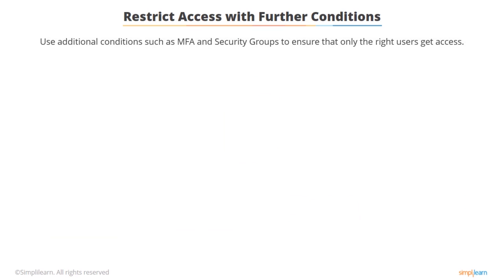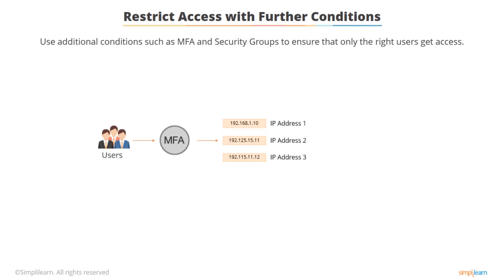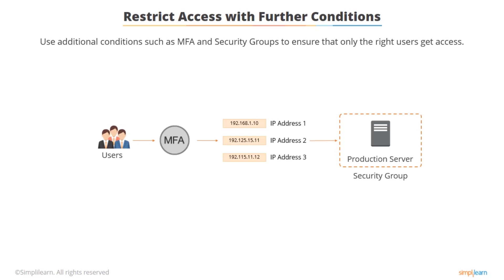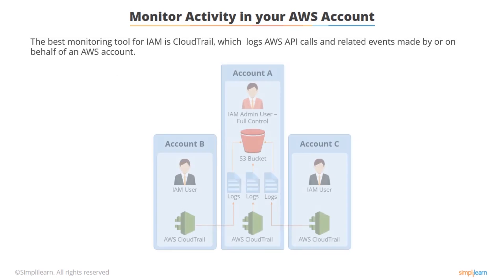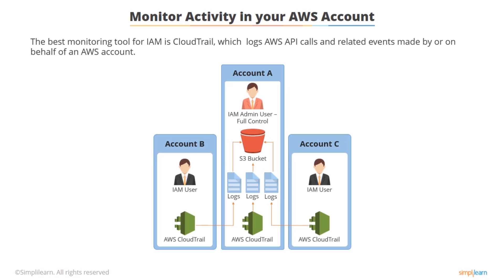Where possible, it's always a good idea to add additional access control to ensure resources are fully protected. Examples include requiring MFA to log in, or specifying that access to certain resources can only come from a particular IP address. For example, you could allow RDP access to a production server only if the user connects with MFA and then RDPs from a server within a particular IP address range. Anyone failing this security check won't be able to RDP in. AWS provides several features to log user actions – log files show time and date of actions, source IP addresses, which actions failed due to inadequate permissions, and many more.